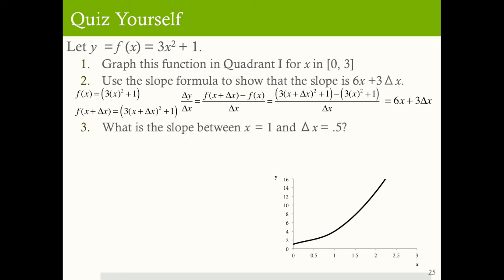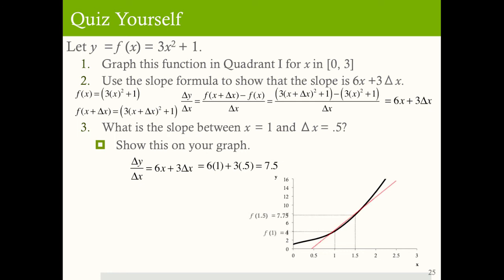The third question: what is the slope when x equals 1 and Δx equals 0.5? In other words, what's the slope between x equals 1 and x equals 1.5? Plugging into the formula gives 7.5. On the graph, we're calculating the slope of the secant line between x equals 1 and x equals 1.5, and the change in y over change in x is 3.75 over 0.5, which equals 7.5 — exactly as expected.